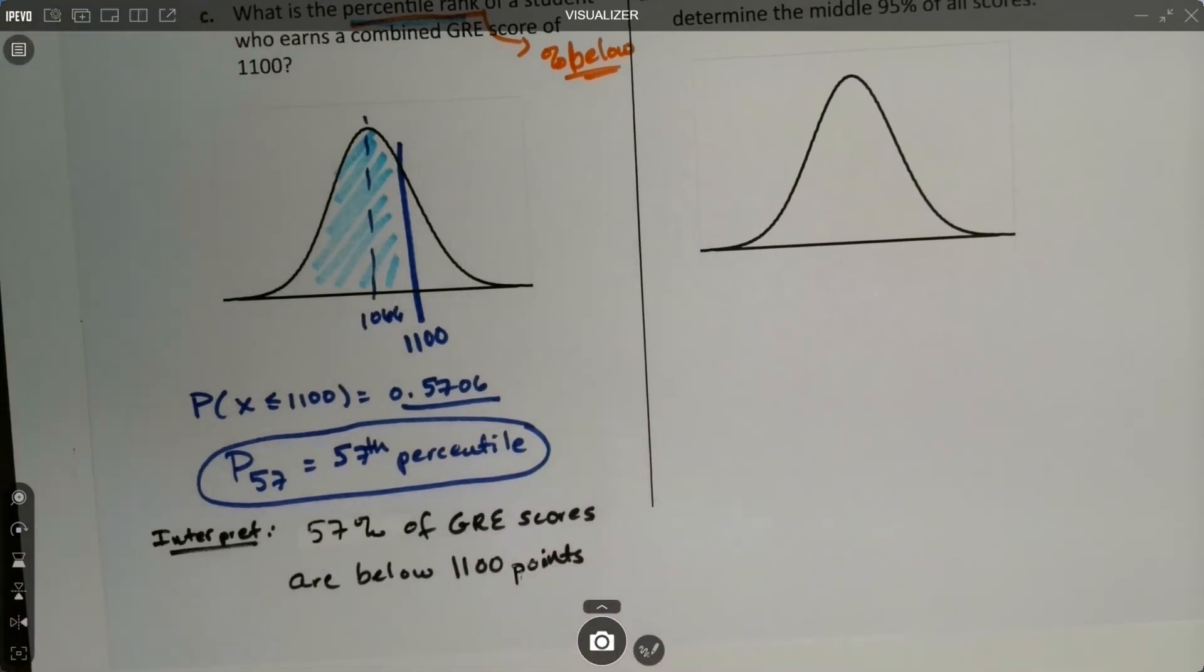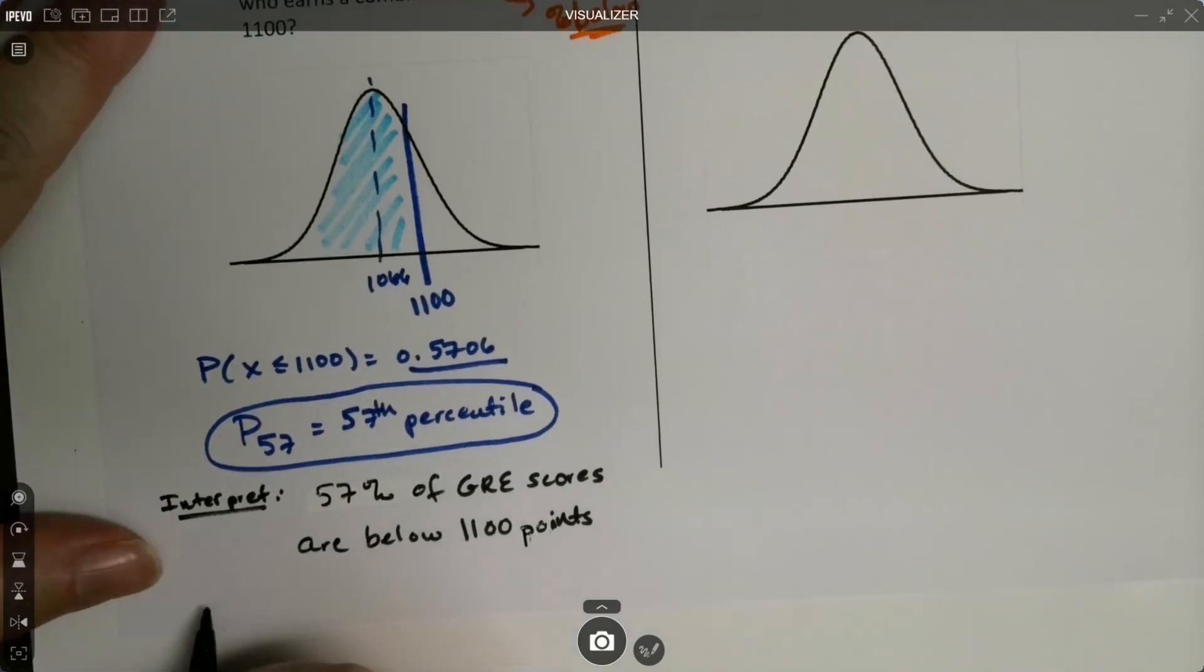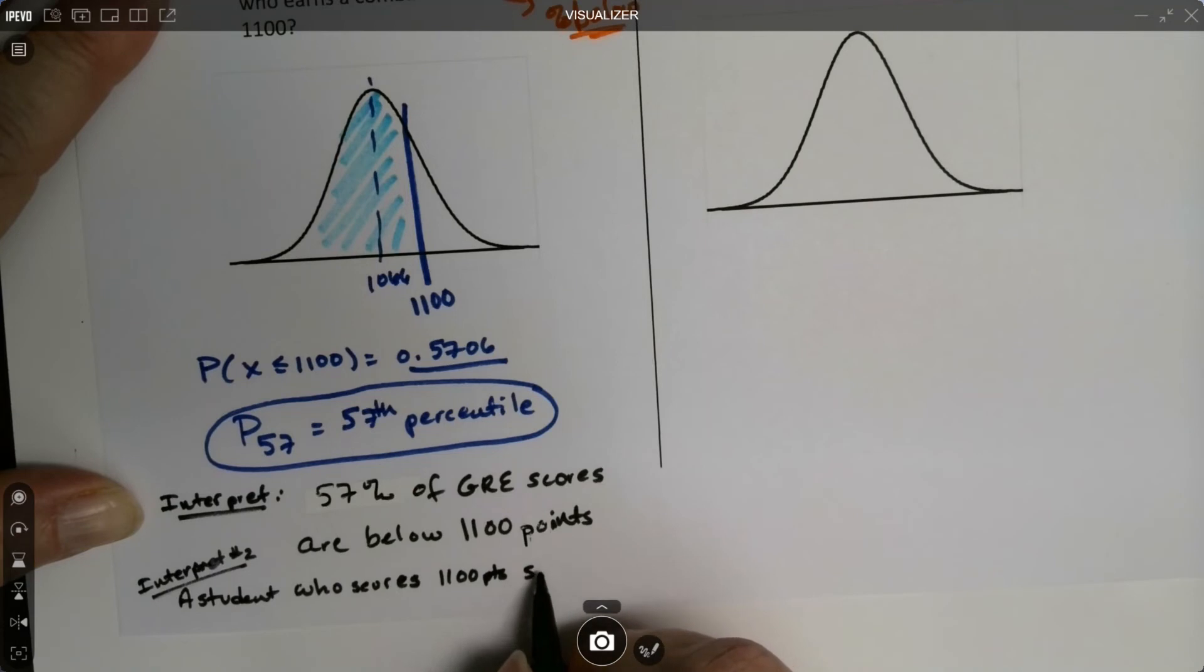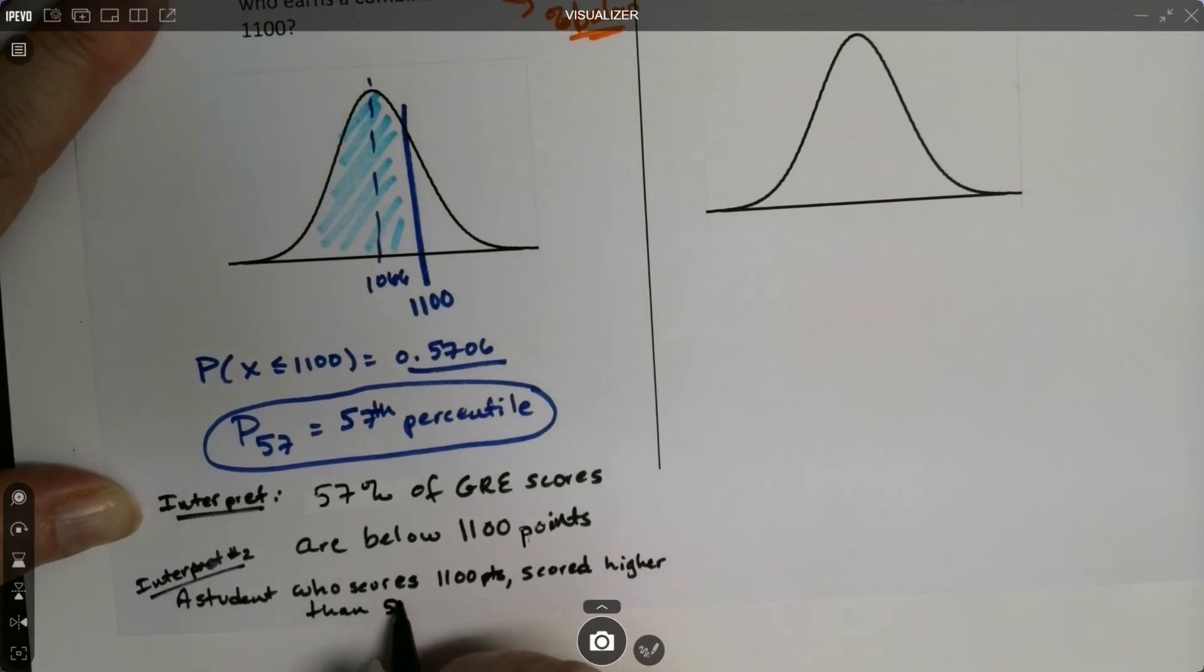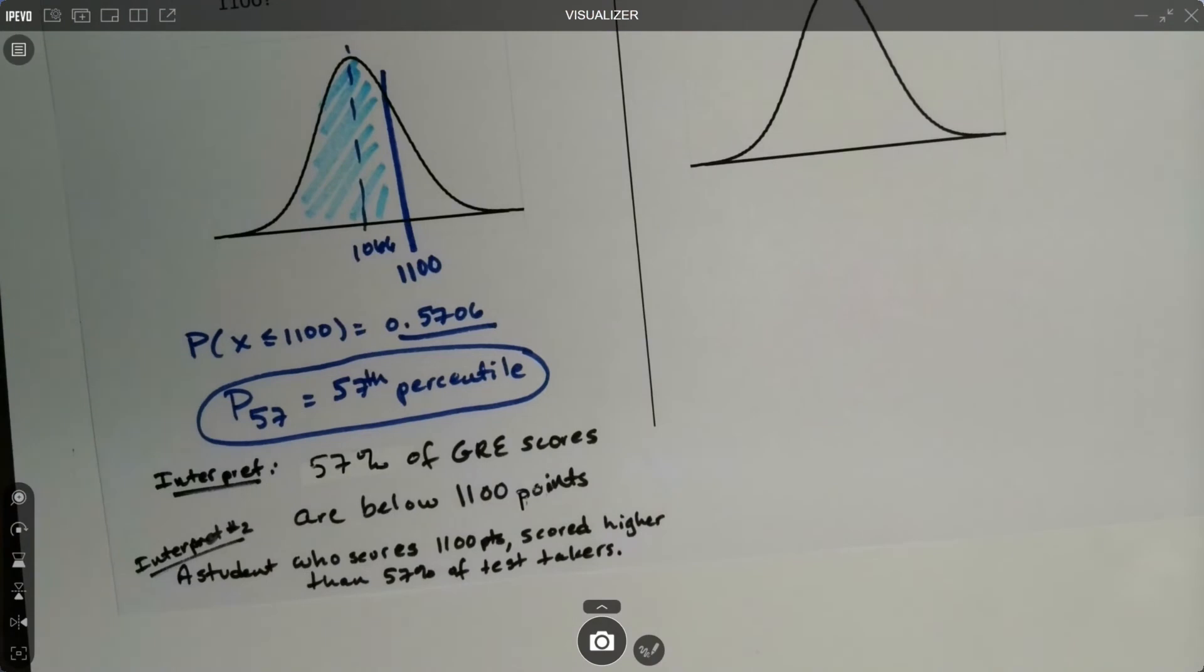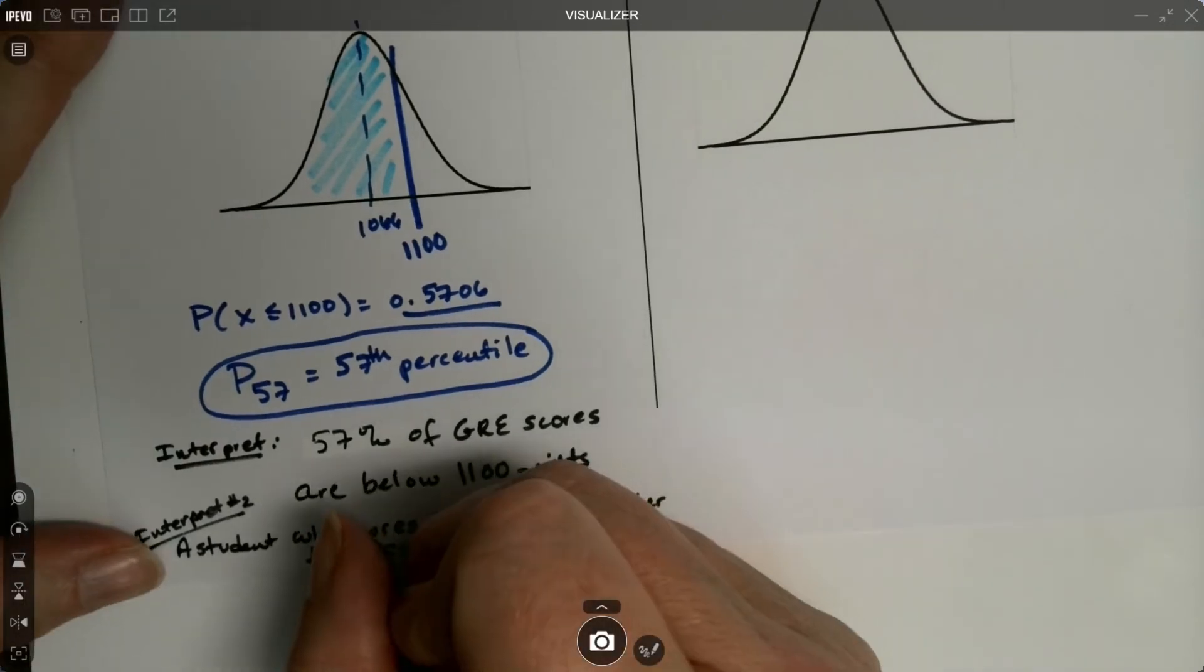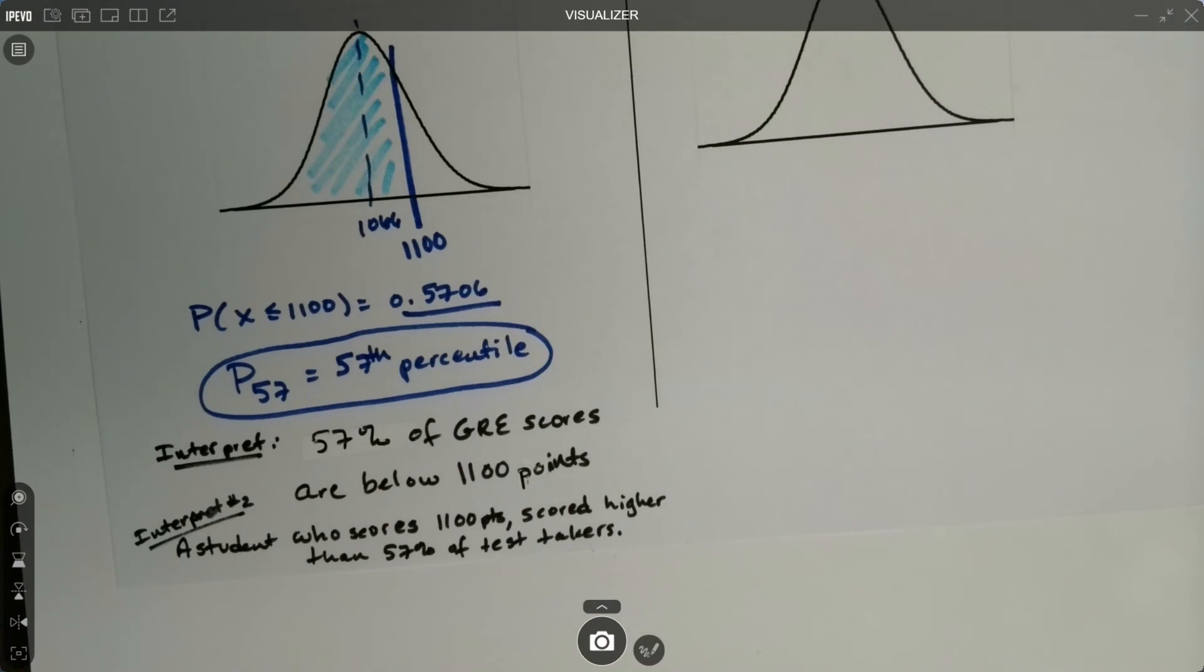It didn't specifically ask for it. You could also get into, a student who scores 1100 scored better. I'll mention that. A student scoring 1100. This is kind of an old school interpretation. This is what we learned in chapter three. I'll label it interpretation number two. A student who scores 1100 points scored higher than or did better than 57% of test takers. We learned that kind of back in chapter three. If you score that value, then you're better than 57% of the people that took it along with you.